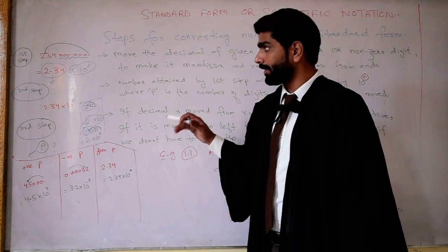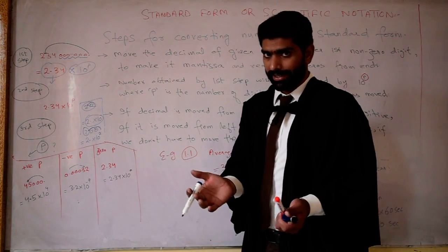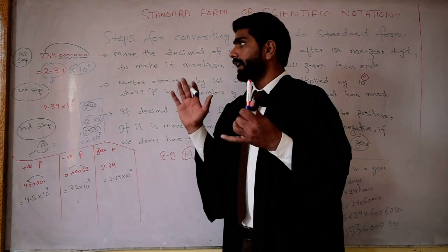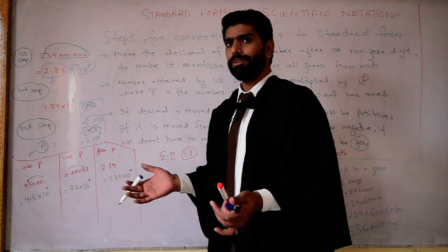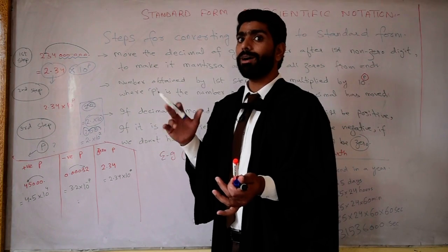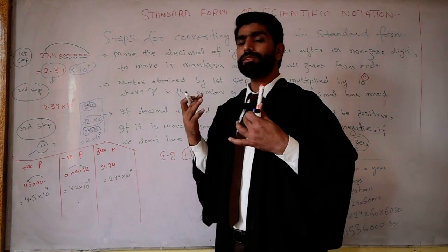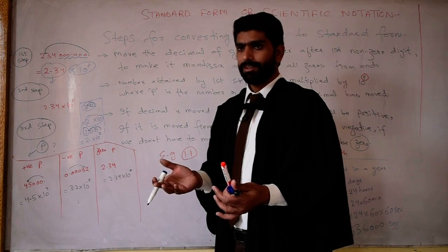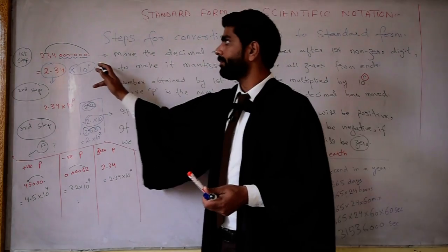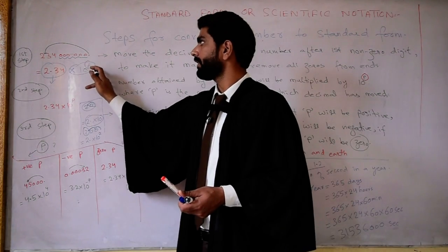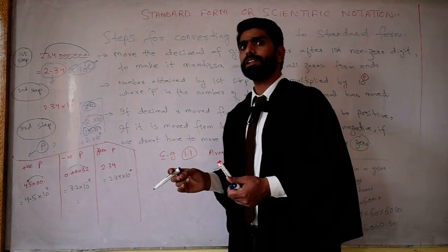First point: place the decimal after the first non-zero digit and remove all zeros from the ends. Second point: the number obtained from the first step will be multiplied by 10 to the power equal to the number of digits which the decimal has moved. The number of digits we moved the decimal is written as the exponent of 10.